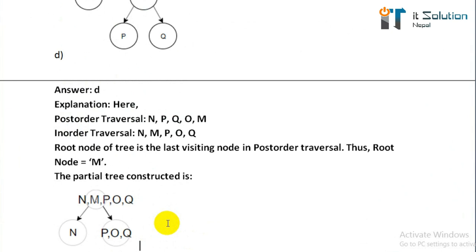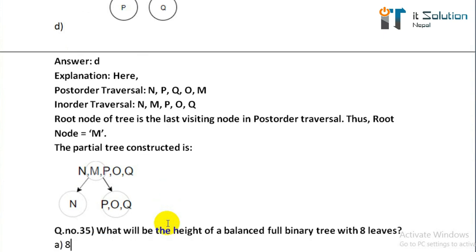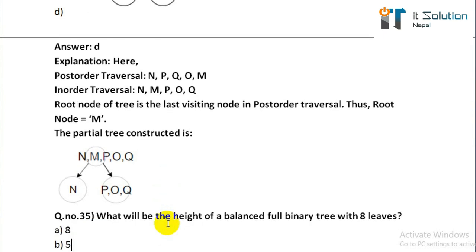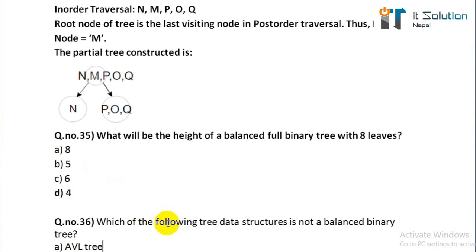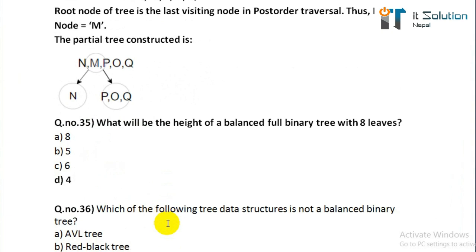The root node of the tree is the last visited node in post-order traversal, thus the root node is m. Question number thirty-five: what will be the height of a balanced full binary tree with 8 leaves? Its correct answer is 4, option D.